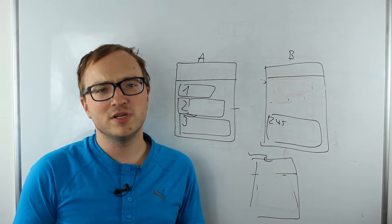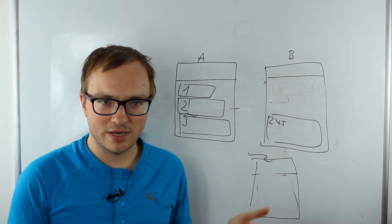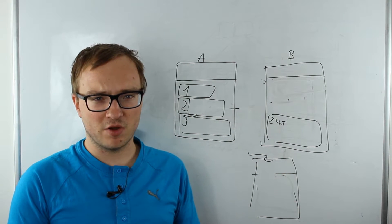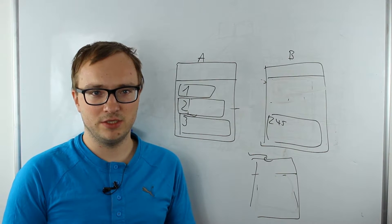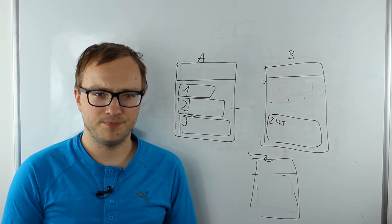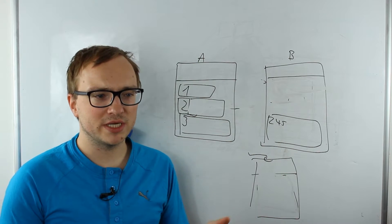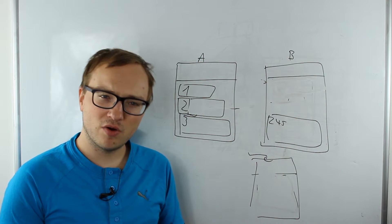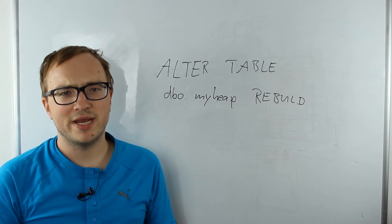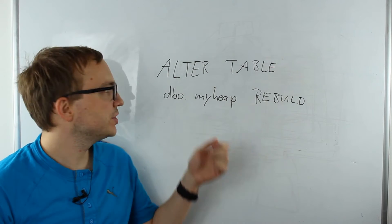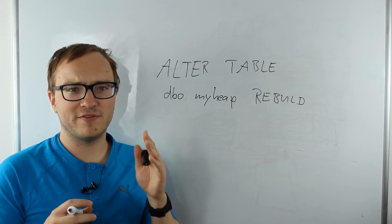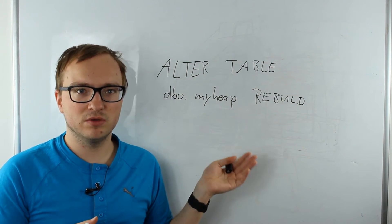A very good question is: how do you actually get rid of forward pointers if they appear in large numbers? You can't just shrink them back. You have to realize that each forward pointer is always one extra IO operation. Imagine 50% of your rows in a heap are forward pointers — you would have 50% useless IO. You can only get rid of those pointers by rebuilding the table. Rebuilding a non-clustered index using ALTER INDEX won't do anything to the heap itself. The only correct way is the command ALTER TABLE [heap_table] REBUILD.